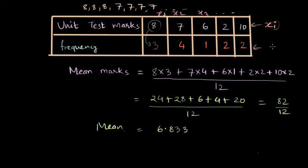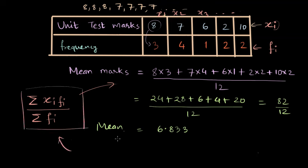And the frequency is represented as FI. So what we have done in this formula is basically we have summed up—this is a summation sign—we have summed up the multiplication of XI and FI, and we have divided it by the summation of FI, or all the frequencies. So this is how we calculate the mean when we have data given in tabular form with frequency.